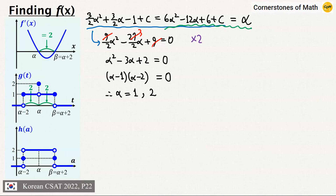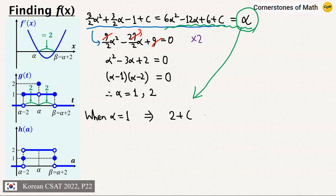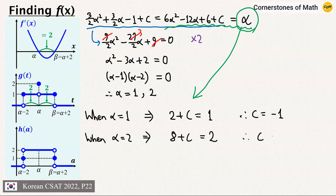We still haven't used the equals-α part yet, and we can use that to obtain c. When α = 1, f(1) = 2 + c = 1, therefore c = −1. When α = 2, f(4) = 8 + c = 2, therefore c = −6. So we have obtained these two possible cases: α = 1 with c = −1, or α = 2 with c = −6.